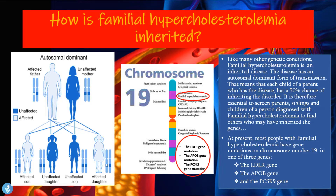At present, most people with familial hypercholesterolemia have gene mutations which occur on chromosome number 19, and these mutations usually occur in one of three genes: the LDLR gene, the APOB gene, or the PCSK9 gene.